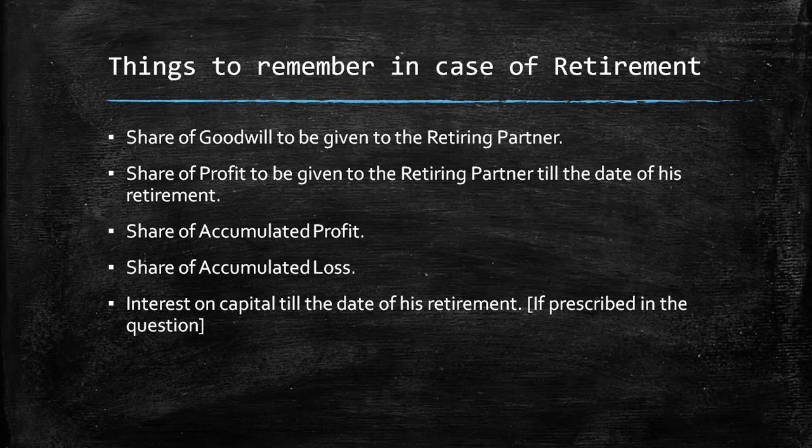Share of accumulated profit means the profit which has been accumulated and kept in the business since many years. Examples include General Reserve or the credit balance of Profit and Loss Account. The debit balance means it is a loss. The share of accumulated profit will be credited to the retiring partner's capital account, and accumulated loss will be debited to his capital account.